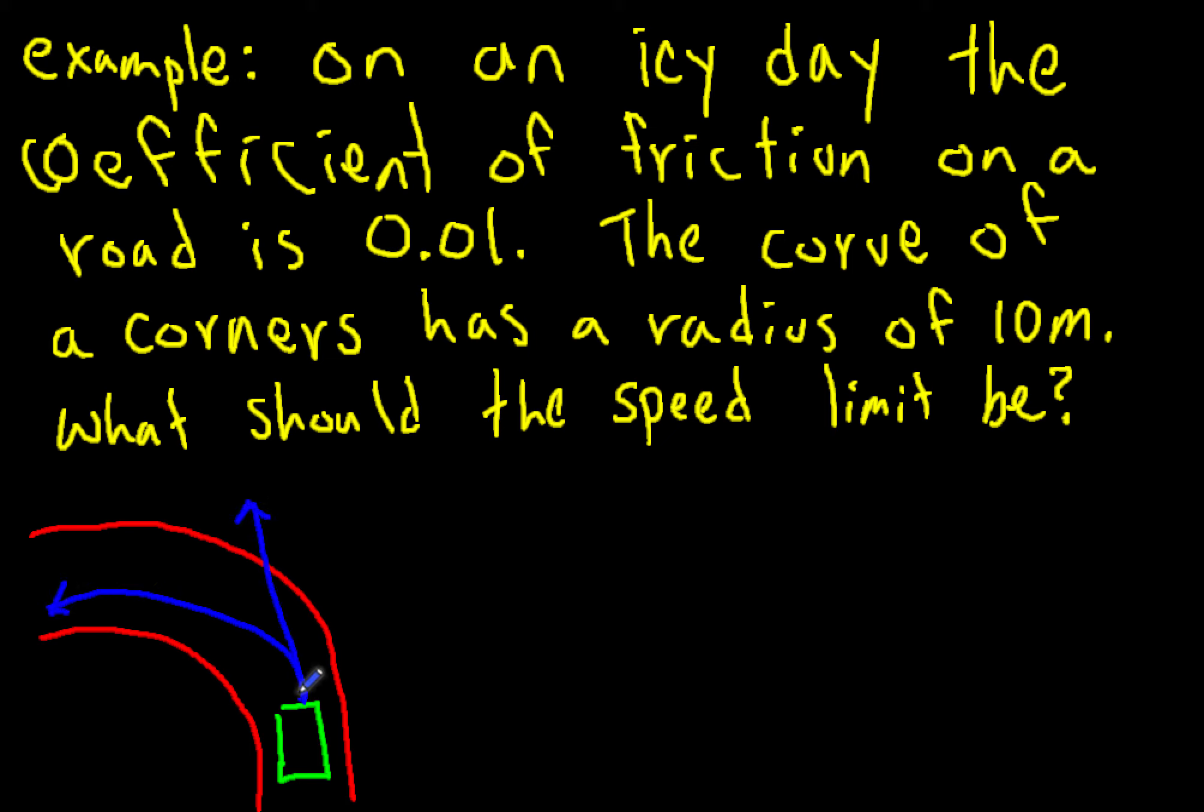If the speed isn't right, it can either travel right off the curve or spin out overturning on the curve. That's why most turns have speed limits.